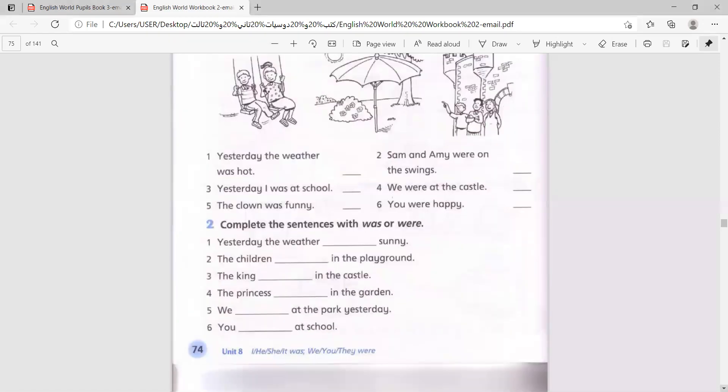We remember was and were and we talked about it. We talked about how he, she, it, I, and singular goes with 'was'. Now they, we, you, and plural go with 'were'.